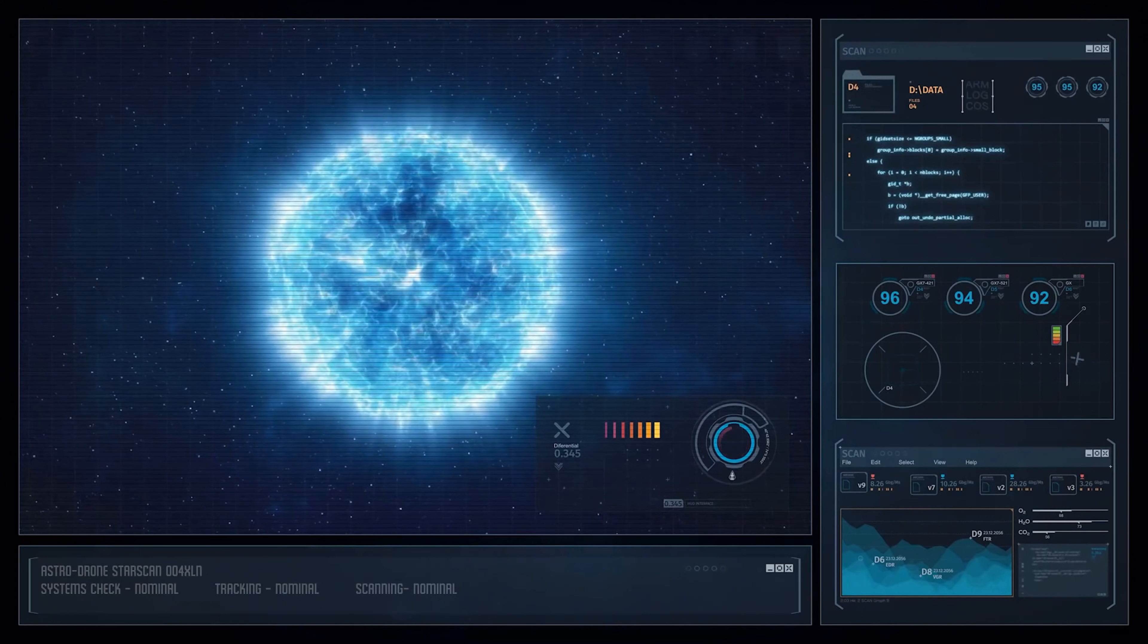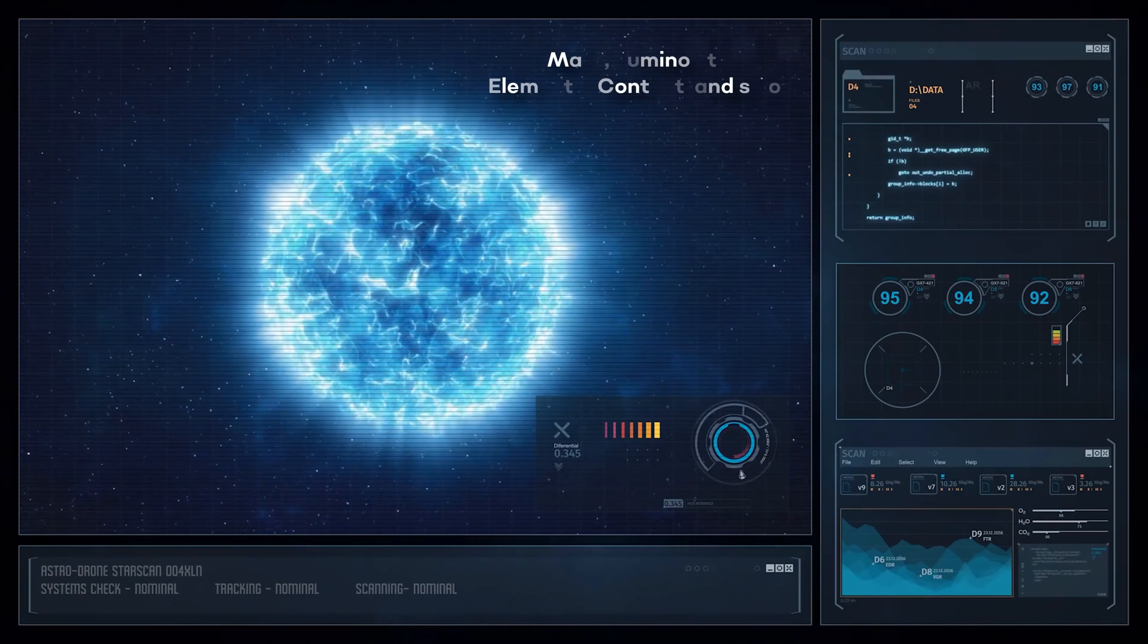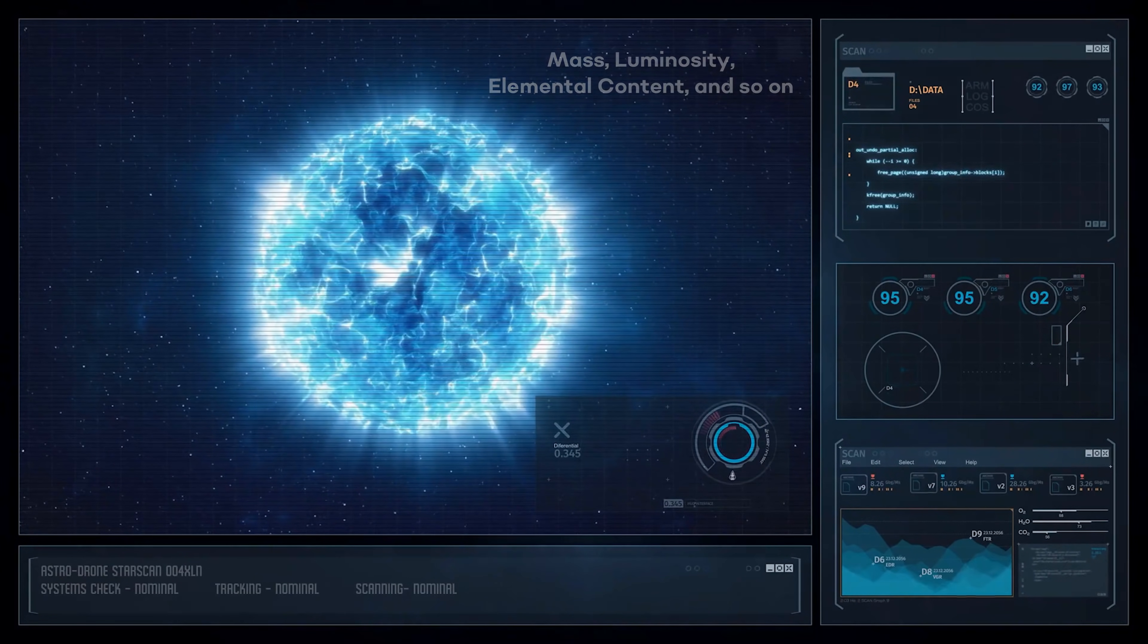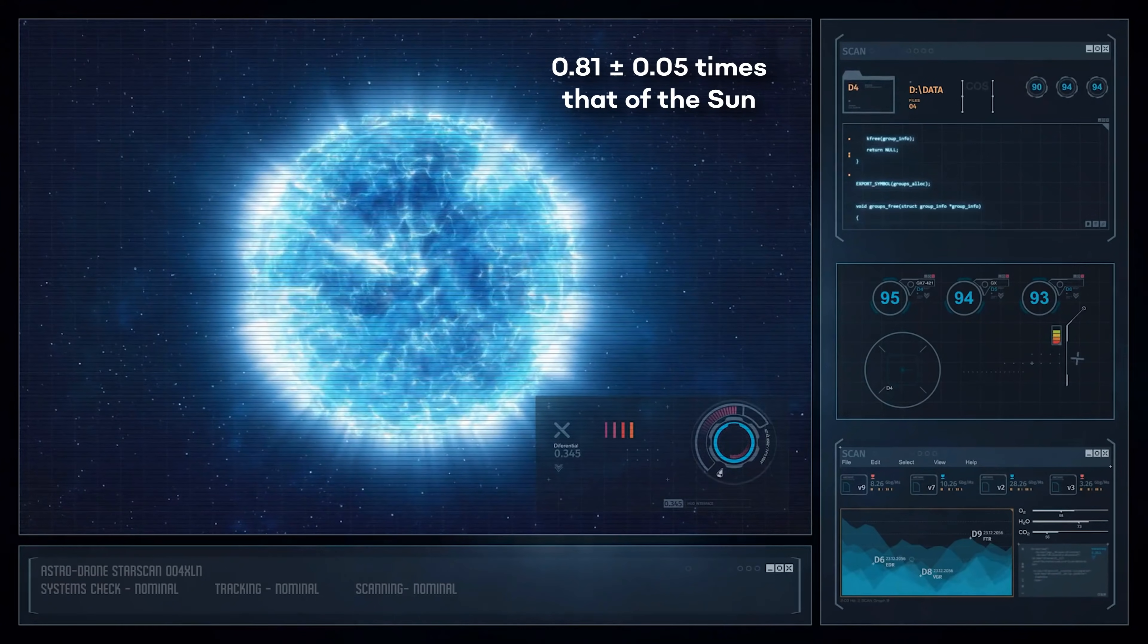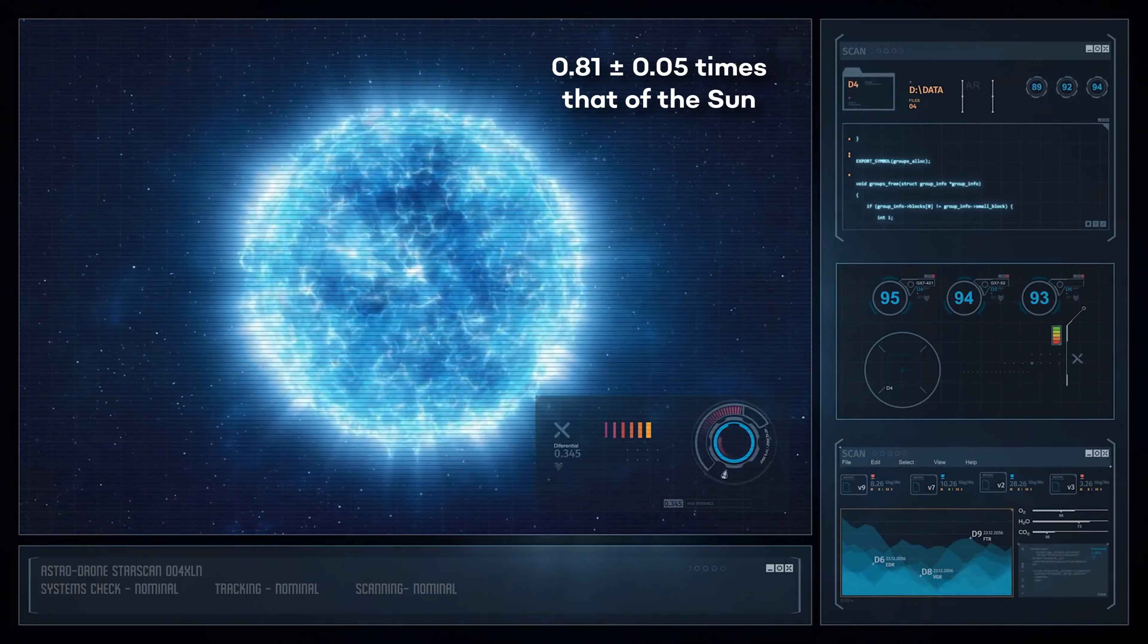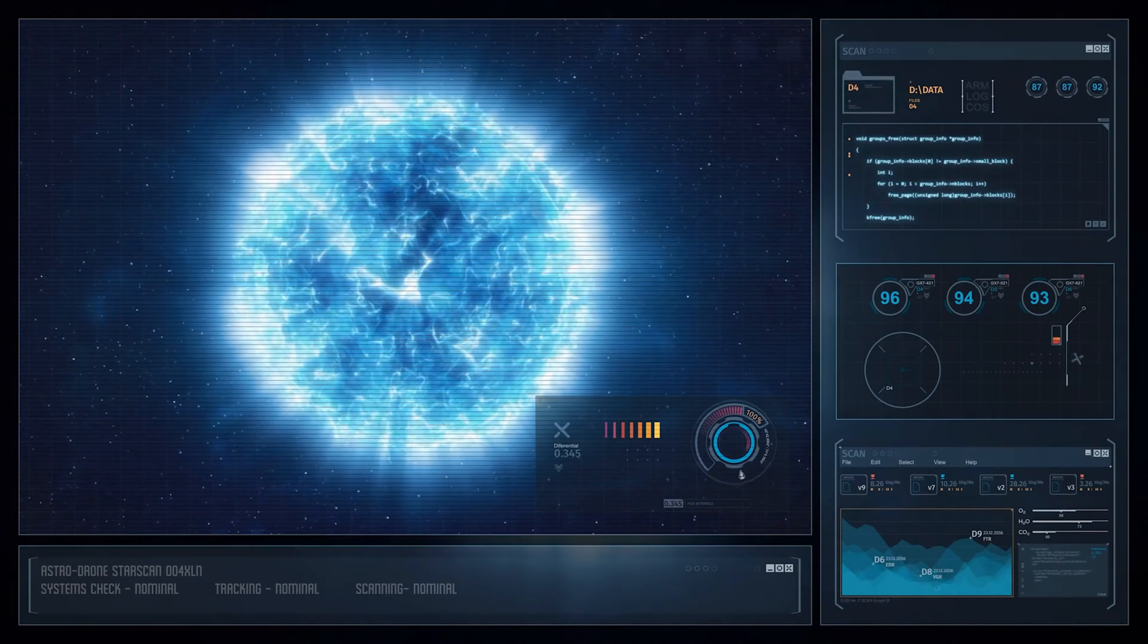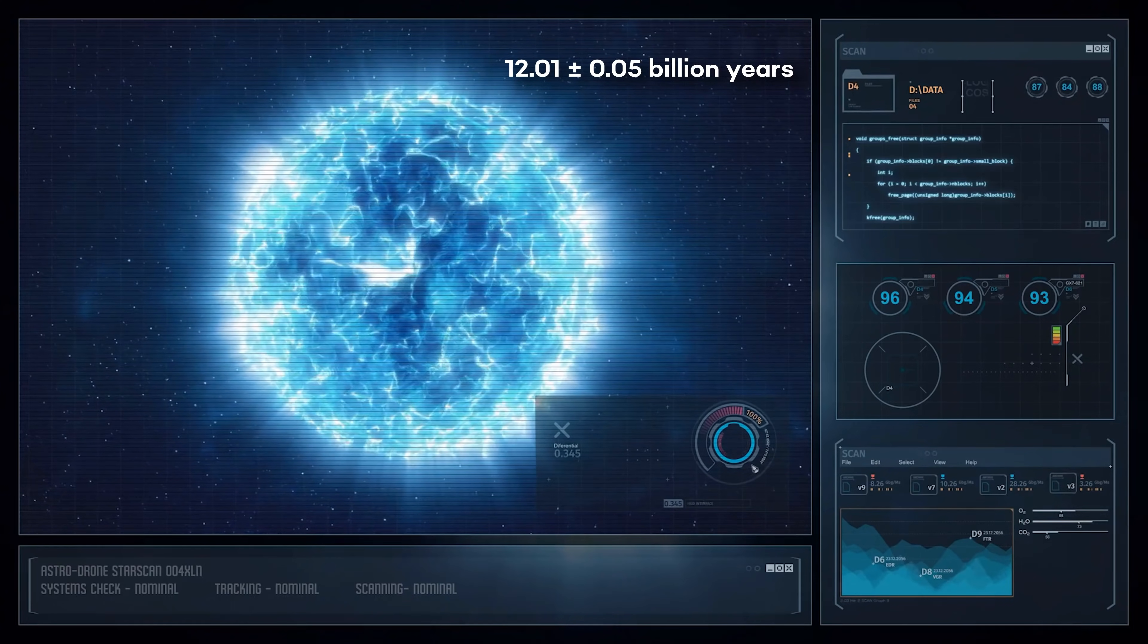They use software that creates models of how stars change over time, given basic properties of them like mass, luminosity, elemental content, and so on. What they found is that the mass of the star is 0.81 ± 0.05 times that of the Sun, which gives us an age of 12.01 ± 0.05 billion years.